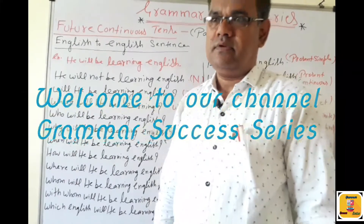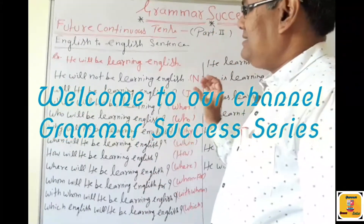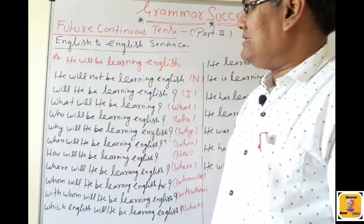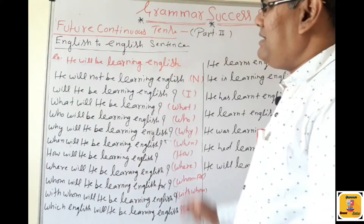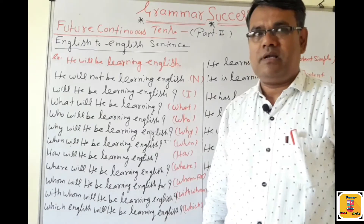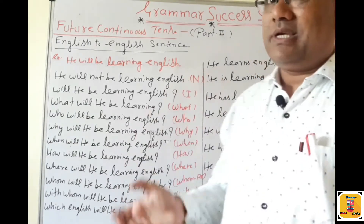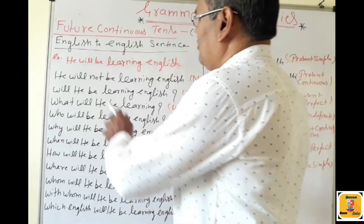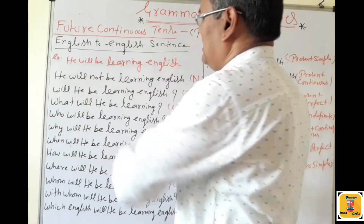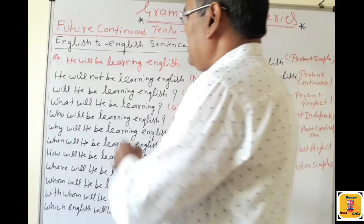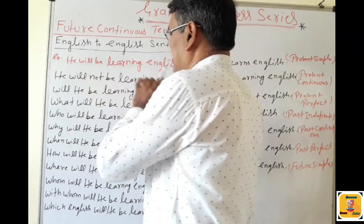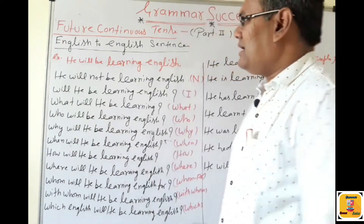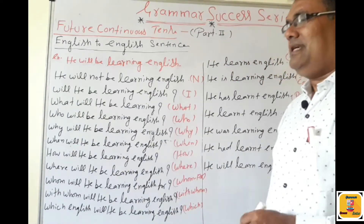Hello students. Now my sentence is here for Future Continuous Tense — an English to English sentence. I am giving here one example: how many sentences we can make from only one example. The sentence is: 'He will be learning English.' Helping verb here is 'will be,' add -ing. This is a Future Continuous affirmative sentence. We will change this sentence.